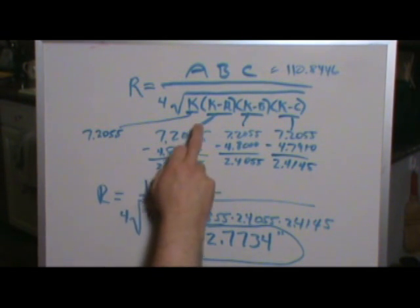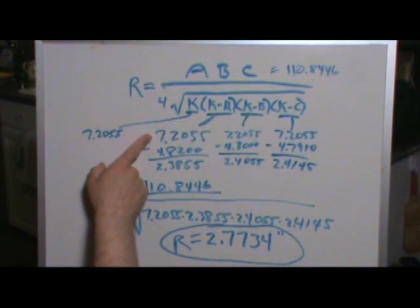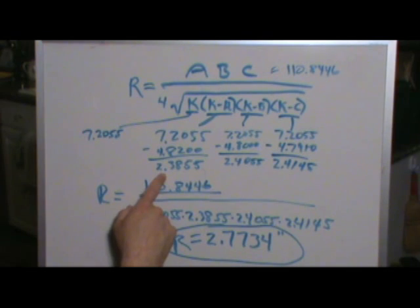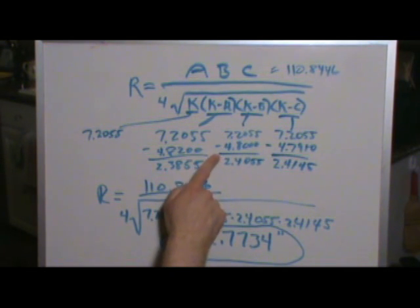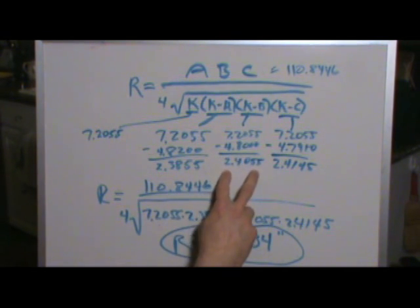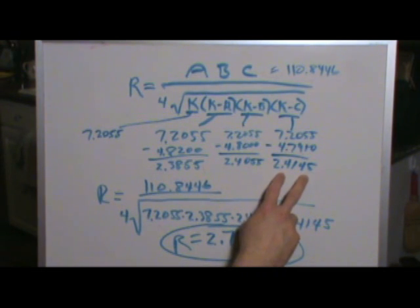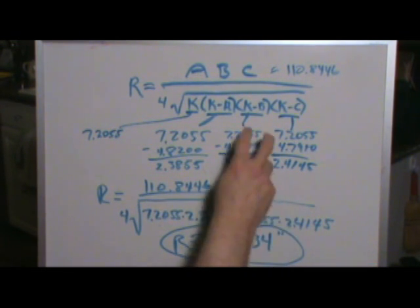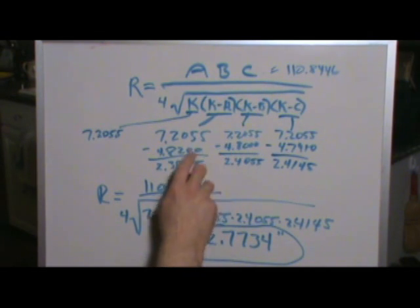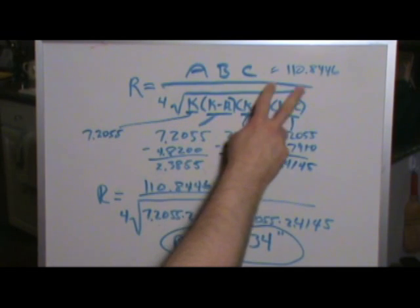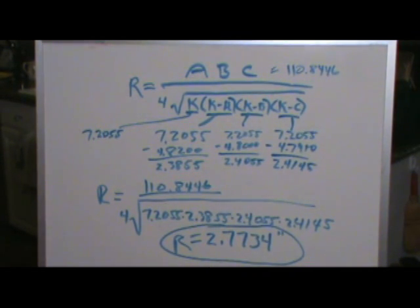So we've already got k in the previous math, 7.2055. k minus a would be that same constant minus 4.8200, which was the side of the first leg. That's 2.3855. The second leg here is 7.2055 minus 4.8, which is 2.4055. And the third chunk here, 7.2055 minus 4.7910, which is 2.4150. a times b times c is just these three numbers, 4.82 times 4.80 times 4.791. Multiply those together, you end up with 110.8446.